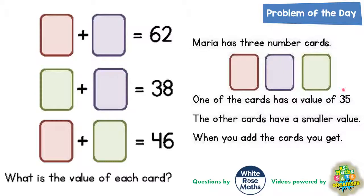One of the cards has a value of 35 but we don't know which. It could be the red one, the purple one, or the green one that's 35, and the other cards have a smaller value.